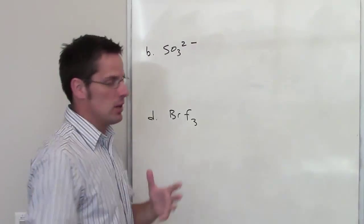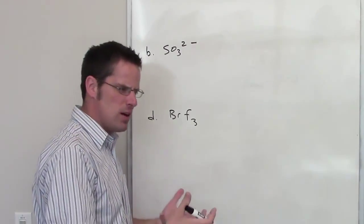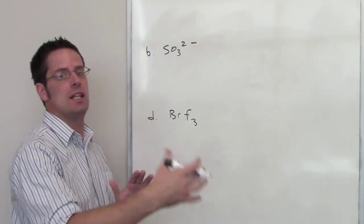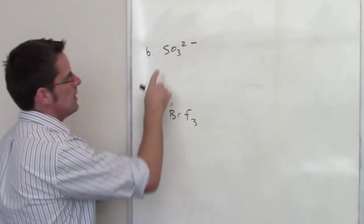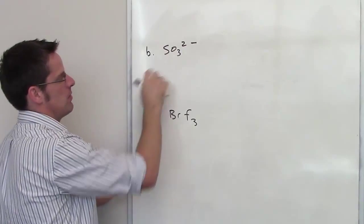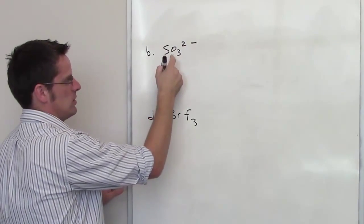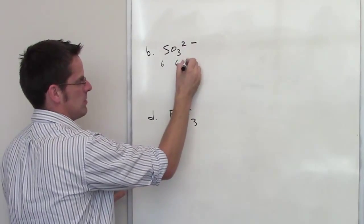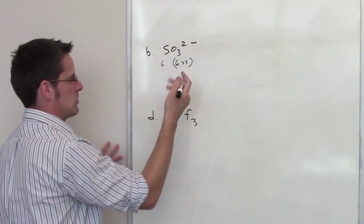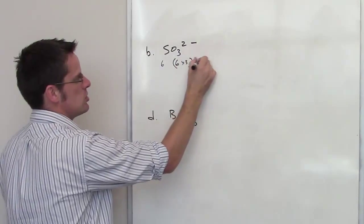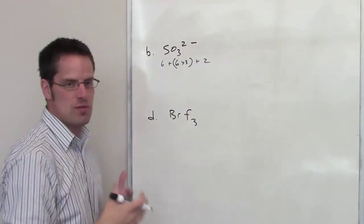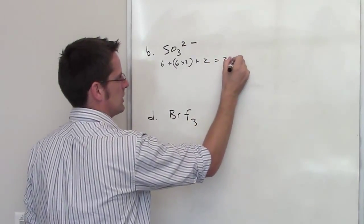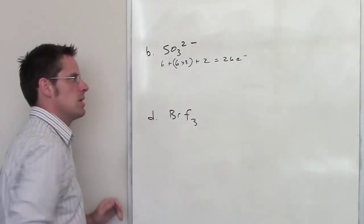As I discussed earlier, in order to draw a molecule's Lewis structure, we first have to count how many total electrons there are in the system. Sulfur is in column six of the periodic table, so it has six valence electrons, as is oxygen. There are three different oxygens here, so I have six electrons from each one. There's a negative two charge, which corresponds to the addition of two more electrons to the system. When I add all that together, I get 26 total electrons to play with.